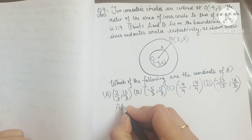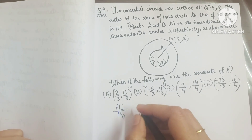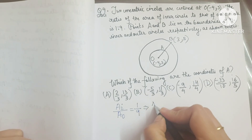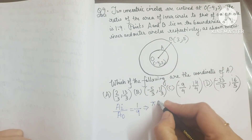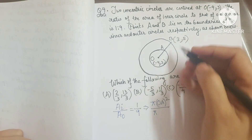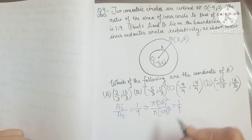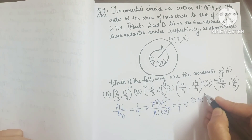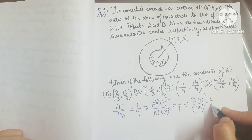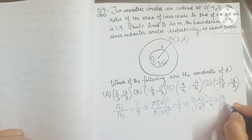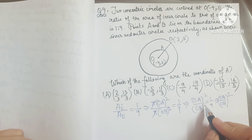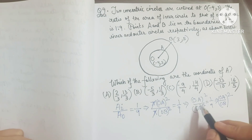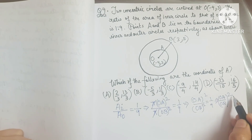We can write: pi times OA squared divided by pi times OB squared equals 1 by 9. The pi cancels, giving OA squared by OB squared equals 1 by 9. This can be written as (OA by OB) squared equals (1 by 3) squared, since 1 by 9 is 1 by 3 times 1 by 3. Therefore OA by OB equals 1 by 3.